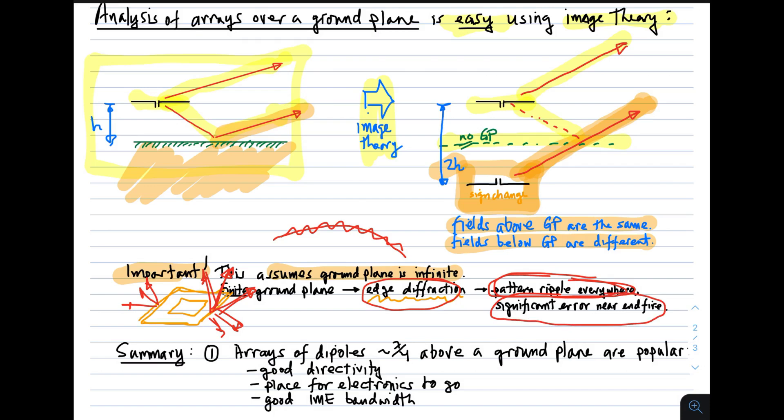The other consequence of edge diffraction is significant error near endfire. See, what happens is these elements are directed primarily near broadside. So as you get close to endfire, to the plane of the ground plane, diffraction will become the dominant contribution. So what you will see when you have a finite ground plane is that you can have fields below the ground plane. They can get there by diffracting around the edge. So you will see that the pattern is relatively accurate near broadside where the element pattern dominates, but the prediction will be relatively poor in the plane of the array and below the array because diffraction will become dominant in those regions.